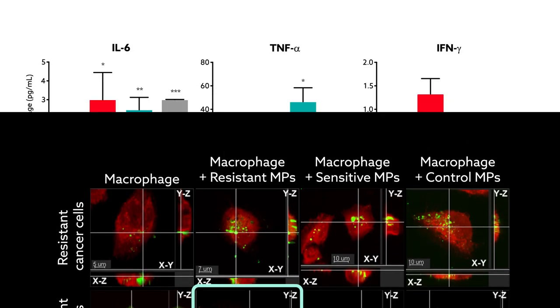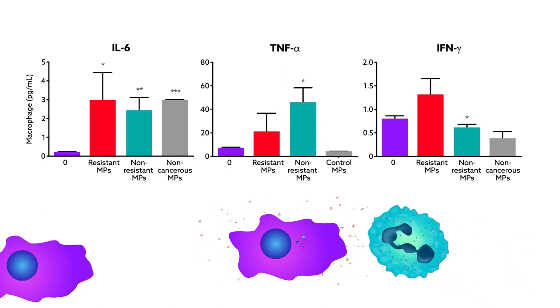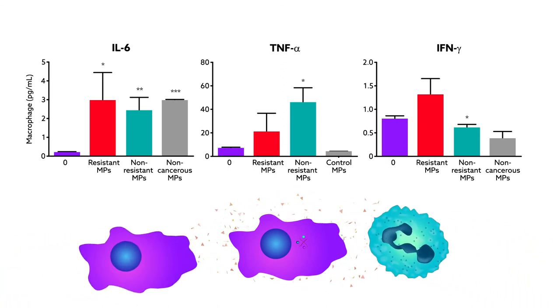The microparticles also caused the macrophages to secrete pro-inflammatory molecules, which can potentially attract additional macrophages and other immune cells, creating a vicious cycle that helps cancer to spread.